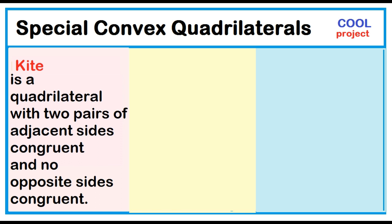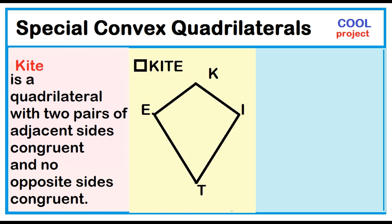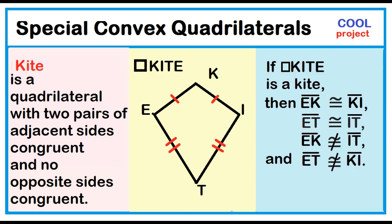A kite is a quadrilateral with two pairs of adjacent sides congruent and no opposite sides congruent. Quadrilateral KITE has two pairs of adjacent sides congruent and no opposite sides congruent. If quadrilateral KITE is a kite, then segment EK is congruent to segment KI, segment ET is congruent to segment IT, segment EK is not congruent to segment IT, and segment ET is not congruent to segment KI.